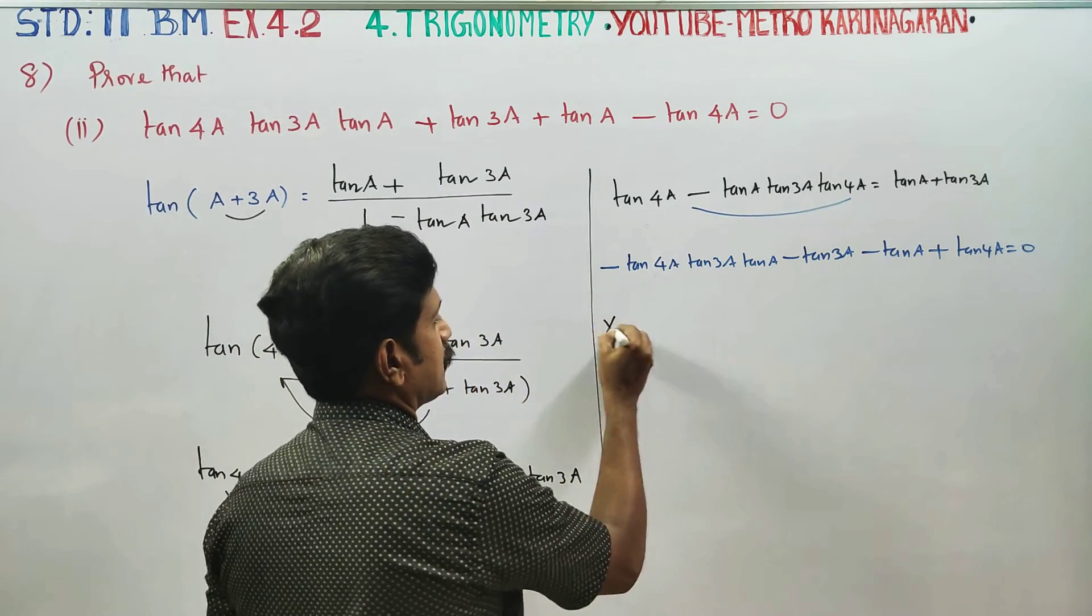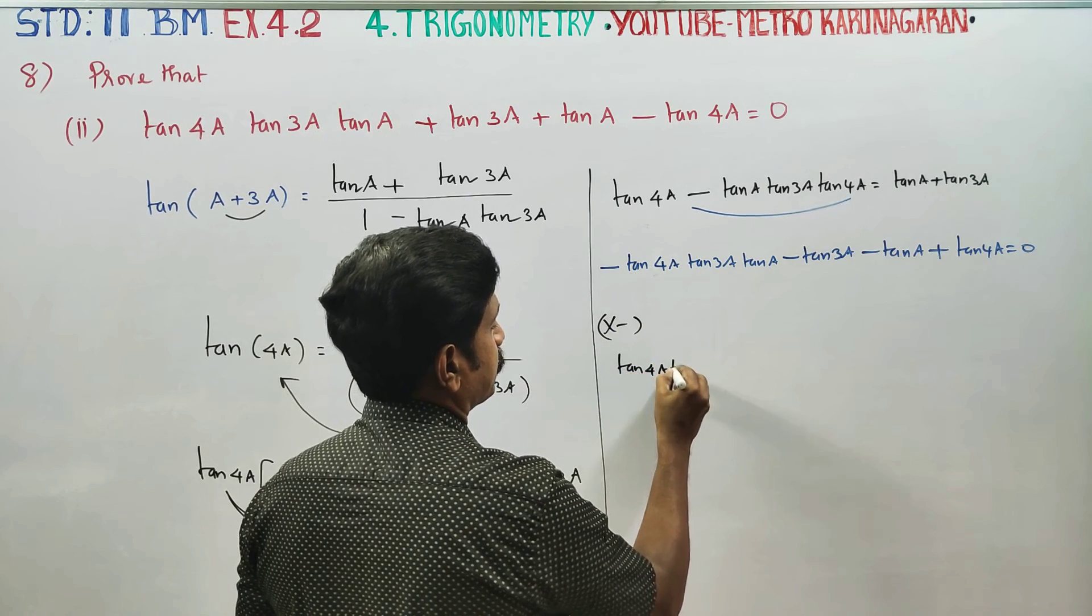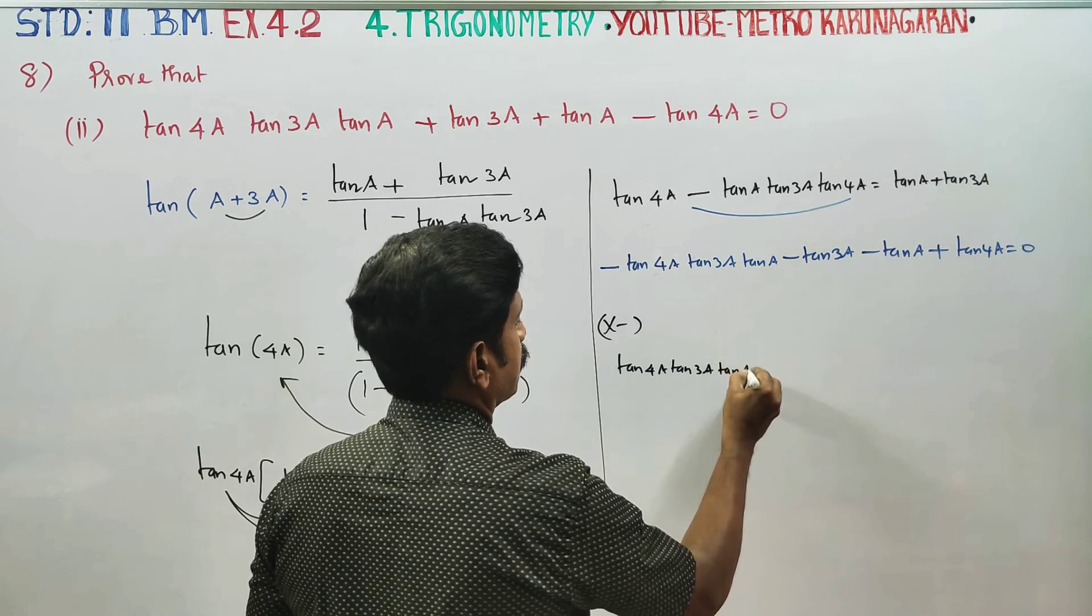When we multiply the full minus, minus multiply minus will be plus. So we get plus tan 4A, tan 3A, tan A.